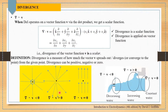For example, the vector function in figure a has a large positive divergence, and in figure b the function has arrows pointing inside so it has a negative divergence. In figure c, the function has zero divergence.